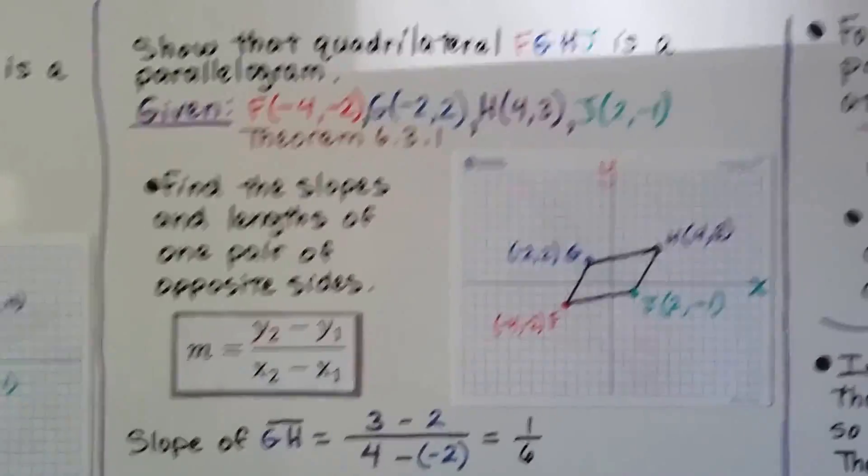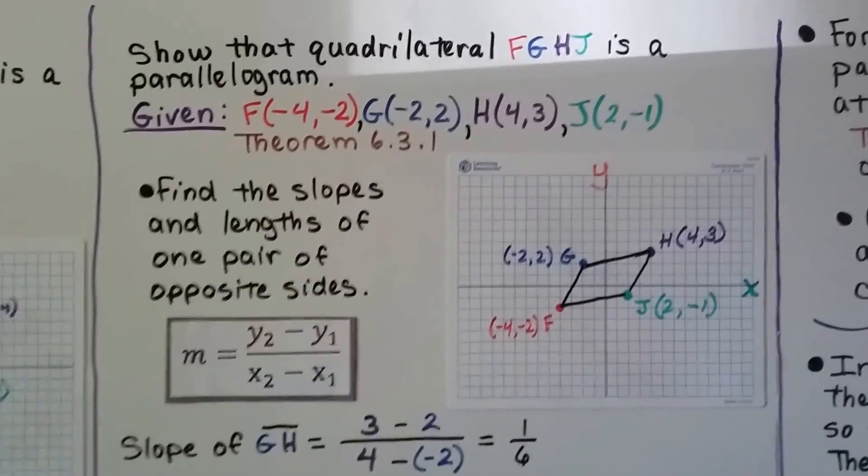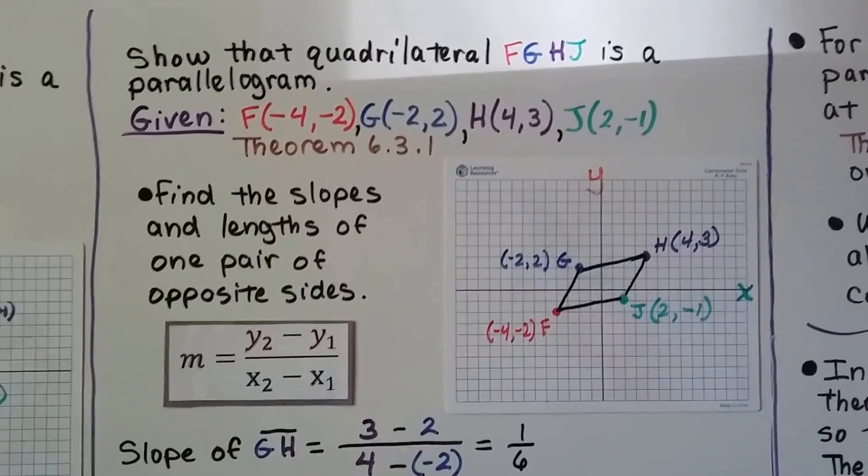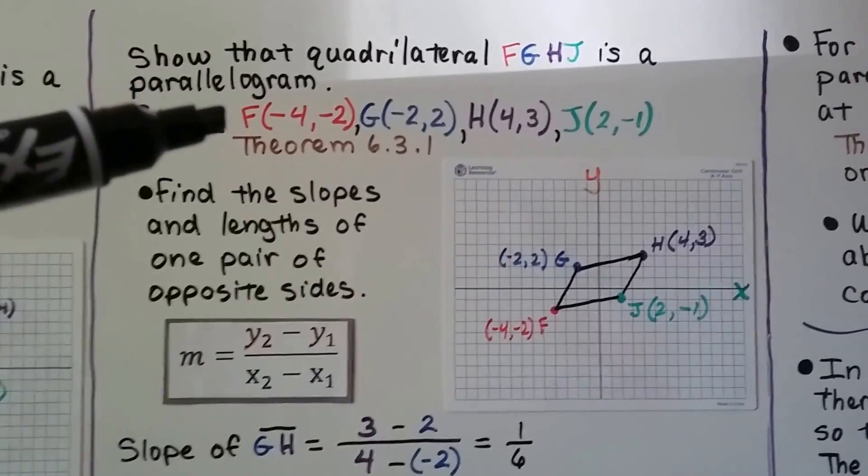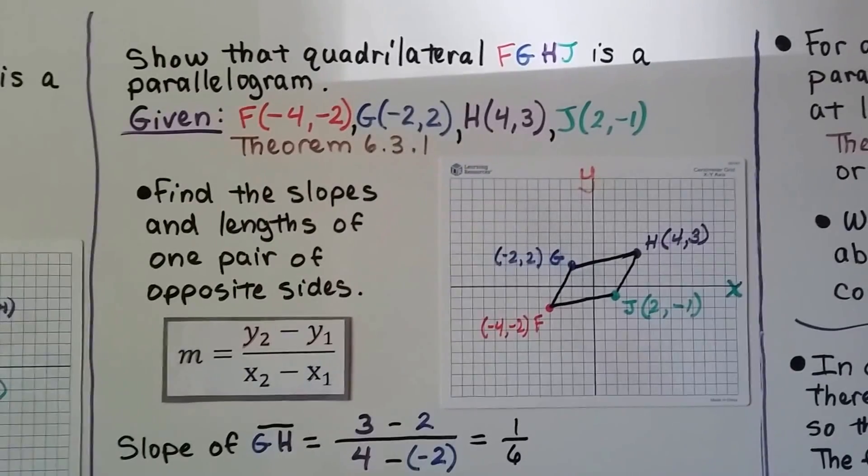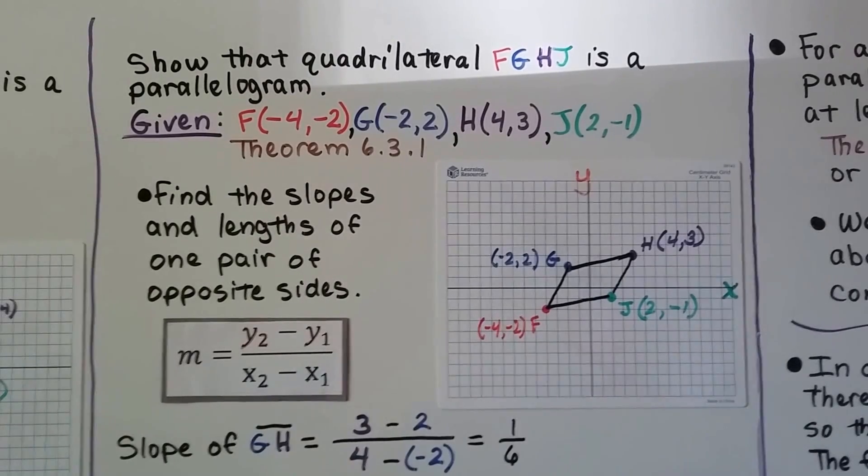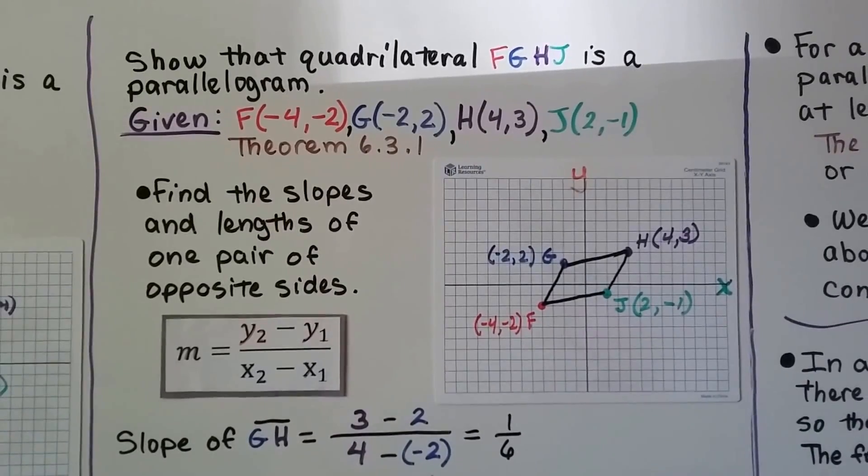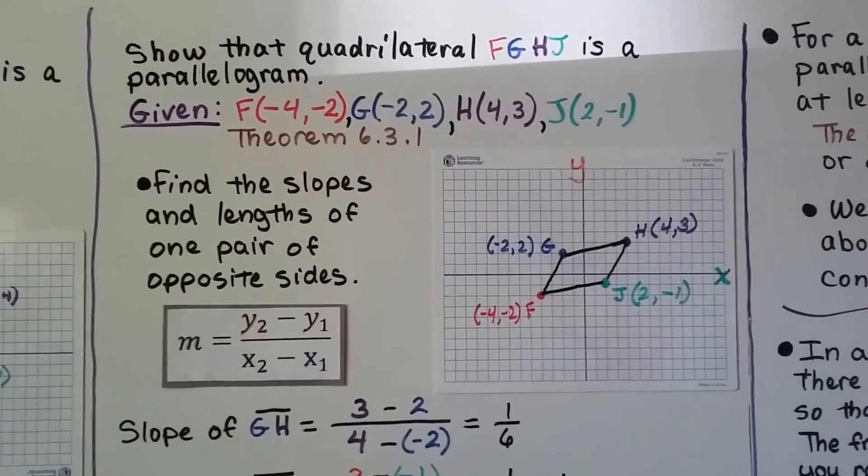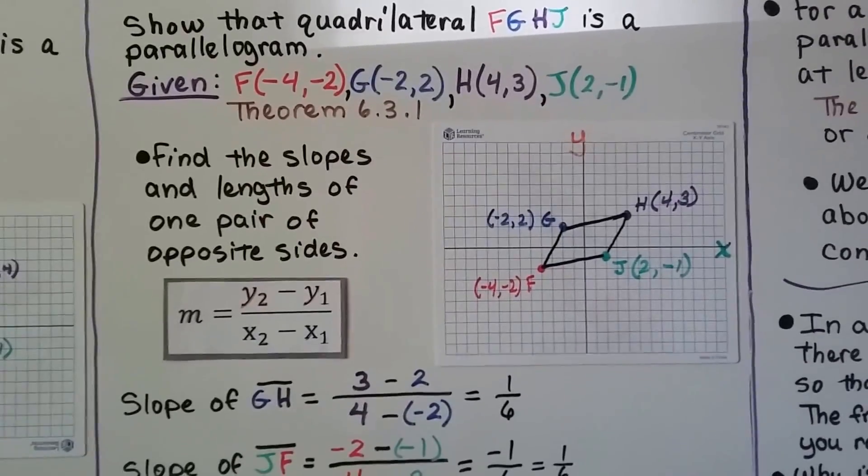Now it says show that quadrilateral FGHJ is a parallelogram, and it wants us to use the given ordered pair points and theorem 6.3.1. And that theorem says one pair of opposite sides are parallel and congruent.